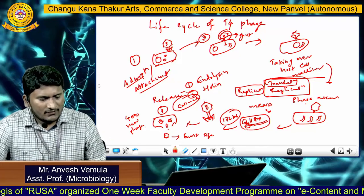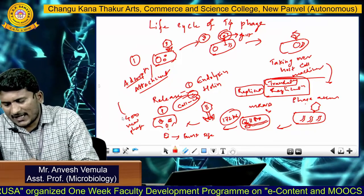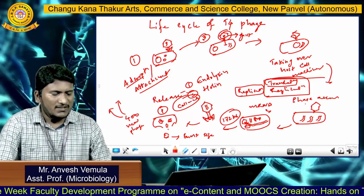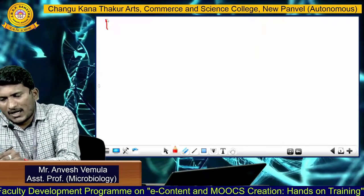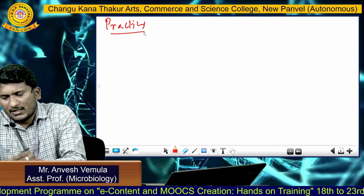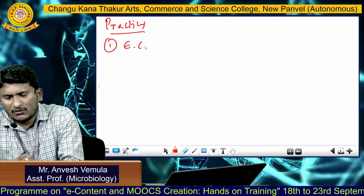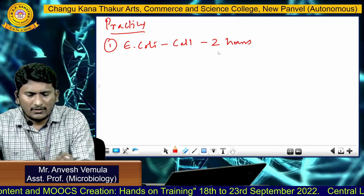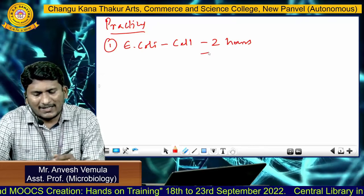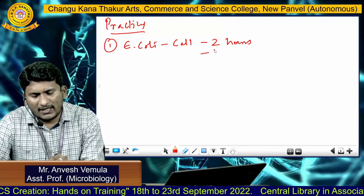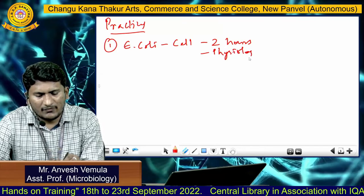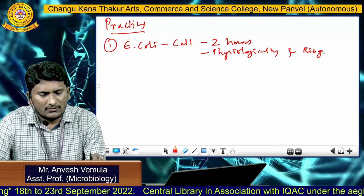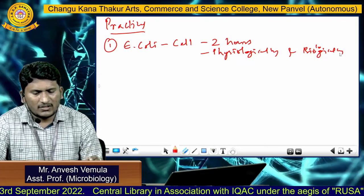Once the life cycle is complete, it will start attacking the next host cells. This is how the life cycle of T4 phage takes place. Coming to the practical part, the first requirement is E. coli cells grown for two hours. These cultures are required because we need physiologically and biologically active cells to carry out the infection process.